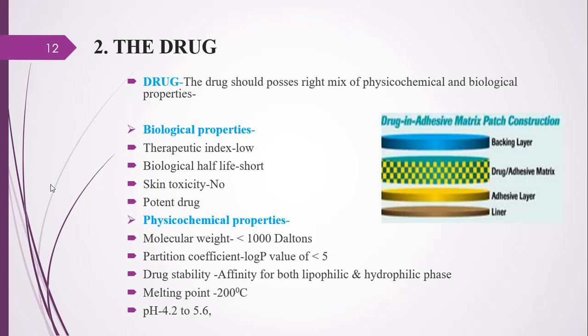The drug should possess the right mix of physico-chemical and biological properties to be suitable for transdermal delivery. Considering biological properties, the drug should have a low therapeutic window, a shorter biological half-life, it should be non-toxic to the skin, and it should be a potent drug — meaning it should be effective at a low plasma drug concentration. Drugs that require a very high plasma drug concentration cannot be delivered by the transdermal delivery system; only potent drugs are suitable.